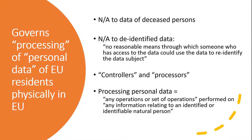A controller is an individual or organization that determines the purposes and means of processing the personal data — basically someone who decides what personal data are needed for a project or activity and what will be done with them. A processor is an individual or organization that carries out the processing for the controller. Personal data is defined very broadly as any information relating to an identified or identifiable natural person. Processing is also defined very broadly and means any operation or set of operations which is performed on personal data or on sets of personal data.